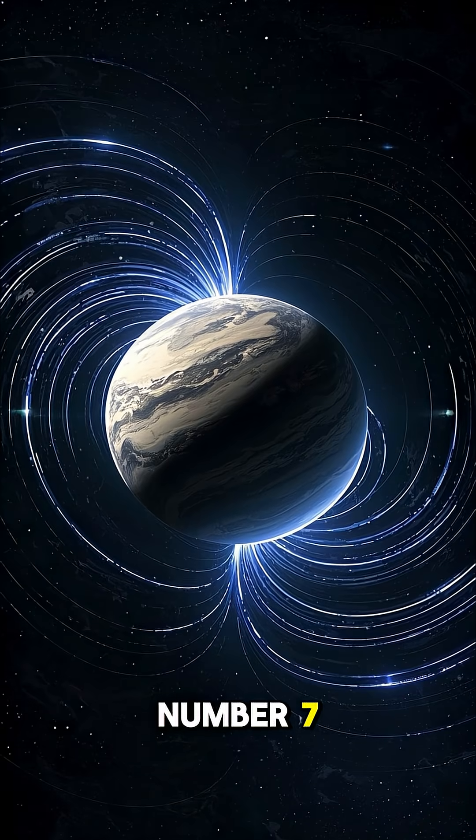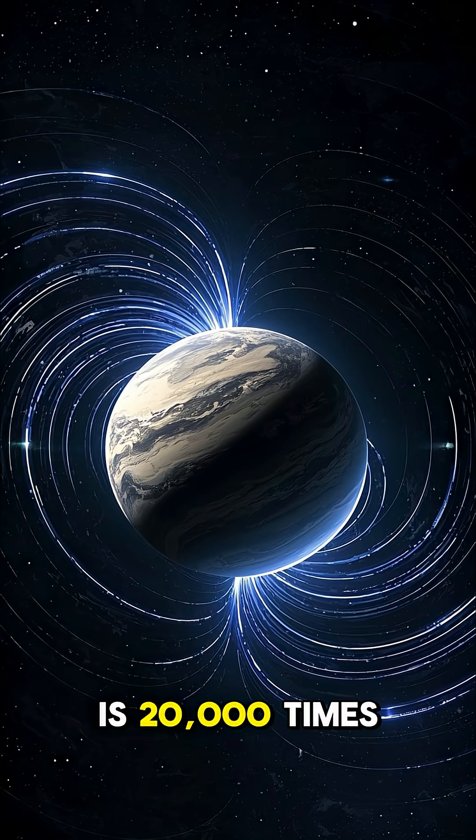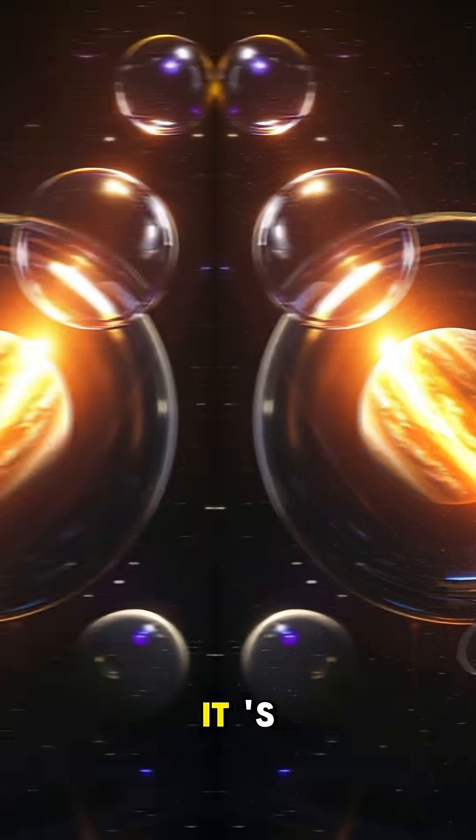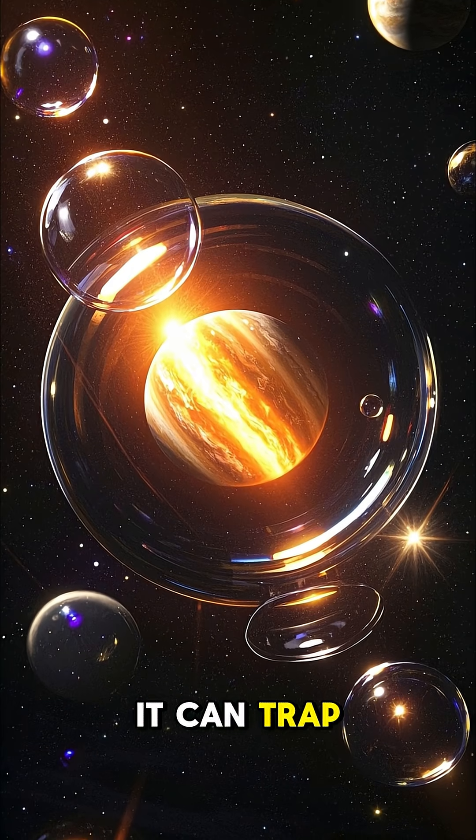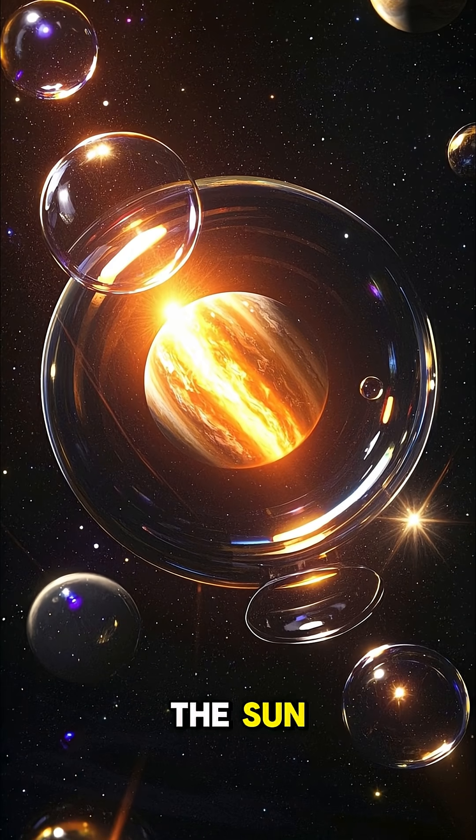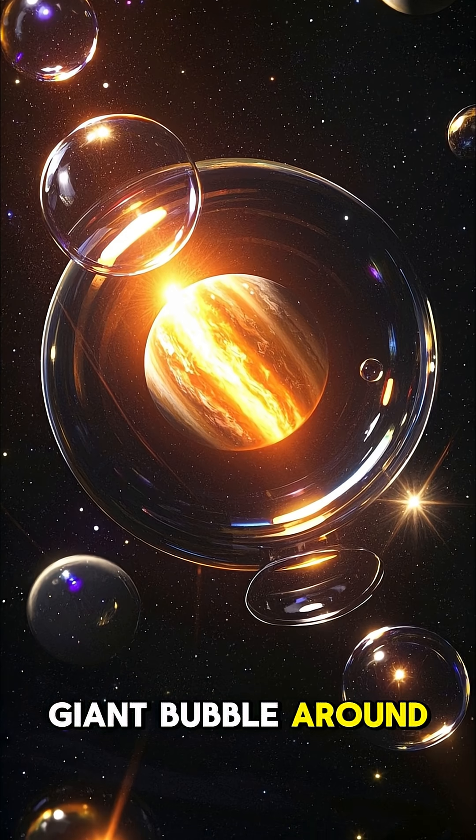Number seven, Jupiter's magnetic field is 20,000 times stronger than Earth's. It's so powerful that it can trap charged particles from the sun and form a giant bubble around the planet.